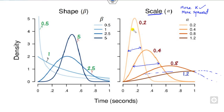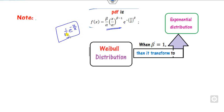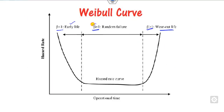When you substitute beta equal to 1, the Weibull distribution becomes the exponential distribution. You can see that when beta is 1, the PDF becomes (1/alpha) times e raised to the power minus x by alpha. This is the exponential distribution. Whenever there is a constant rate, we call it the exponential distribution.